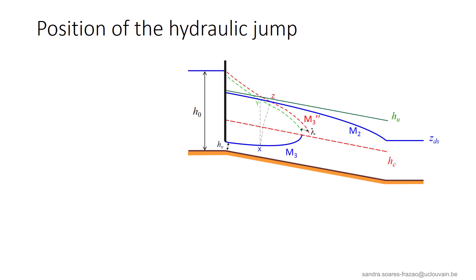However, if we remember that the hydraulic jump extends over a certain distance lambda, we can shift the M3 profile, the M3 prime profile, by this distance lambda, which results in the M3 second profile, here in red. The new intersection is now at point z.